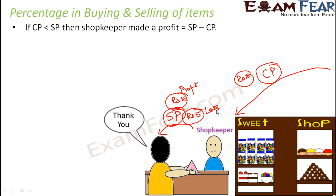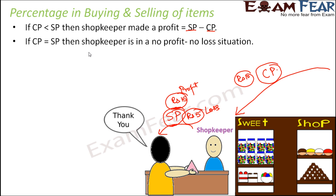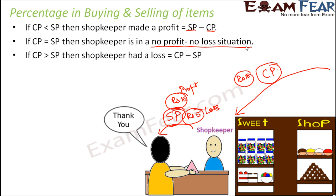Whenever the cost price is less than the selling price, the shopkeeper makes a profit, and profit is given by SP minus CP. When the cost price and selling price are the same — say you buy and sell for rupees 10 — there is no profit and no loss. The third case is when cost price is greater than the selling price; in that case a loss is incurred, and loss is given by cost price minus selling price. These are the three possible scenarios for any shopkeeper.